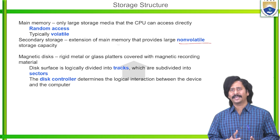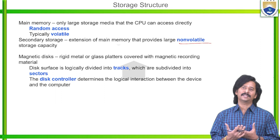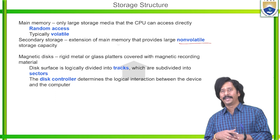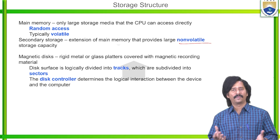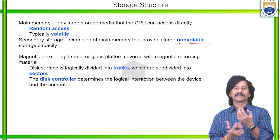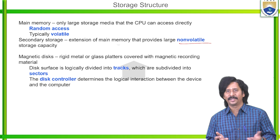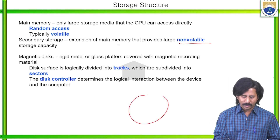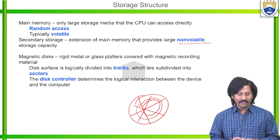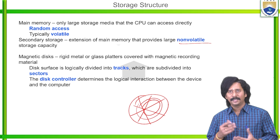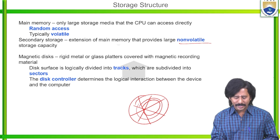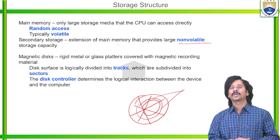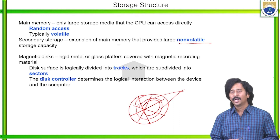Magnetic disks are made up of rigid metal or glass platters covered with magnetic recording material. Previously we had CDs and floppy disks. Each disk surface is logically divided into tracks, which are subdivided into sectors. The disk controller determines the logical interaction between the device and the computer.